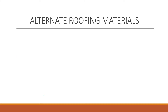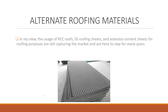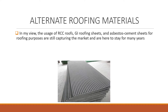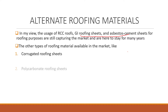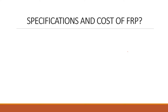Next, alternate roofing materials to FRP. In my view, RCC, GI roofing sheets, and asbestos cement sheets are still capturing the market and are here to stay for many years. Other types of roofing materials available include corrugated roofing sheets, polycarbonate roofing sheets, and metal roofing sheets. We made a separate video on types of roofing materials — the link is in the description and the info button.